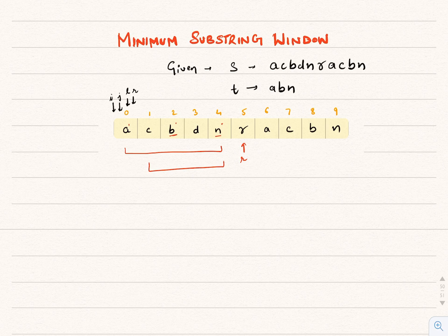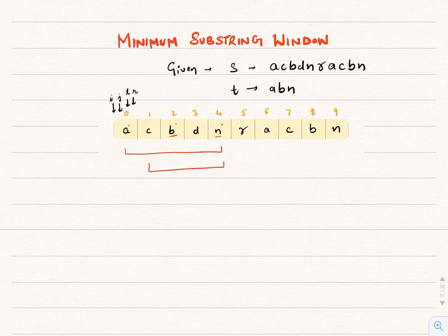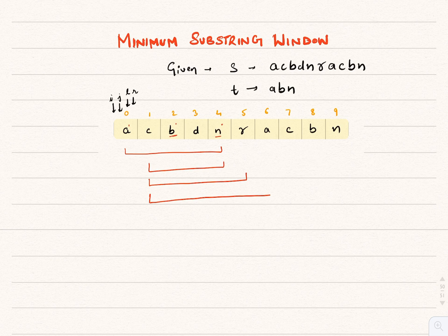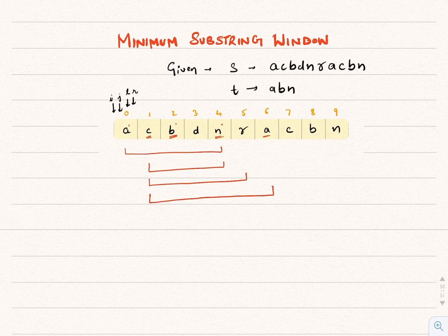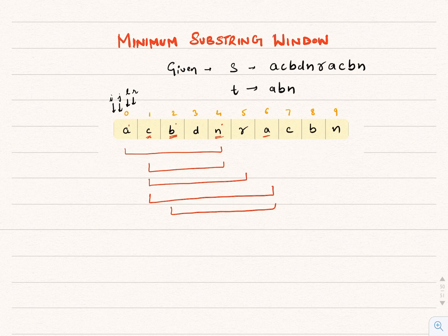So we slide the right pointer towards the right. The window grows from index 1 to index 5, but still doesn't cover all characters. We shift right again to index 1 to index 6. Now this window covers B, N, and A. We try to shrink from the left — C is not in the pattern, so we shrink to index 2 to index 6. The size is still 5, same as before, so we don't update our answer.